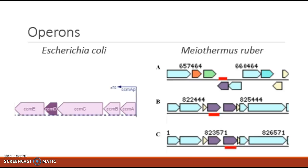Of course, some of these have been cropped out of view just to focus on our important system. But if you can remember from the beginning, all of these genes are involved in the biosynthesis of cytochrome C. We focused only on CCM-A through CCM-D because those are the components of the ABC transporter system. And we see here that E. coli does contain an operon for our desired genes. To the right side, we see the area surrounding each of our Myothermis Ruber genes, coding for CCM-A, CCM-B, and CCM-C genes.